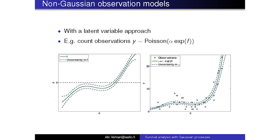This shows the flexibility of Gaussian processes. The name is 'Gaussian process' but it's not just for assuming everything in the model is Gaussian. For example, when we have count observations we want to use a Poisson model. If the parameter of the Poisson model has to be positive, we can use a link function to force it to be positive. So we have the Gaussian process prior in the latent space for f, then through the link function we get the parameter for the Poisson model, while the actual observation model is the discrete Poisson model.